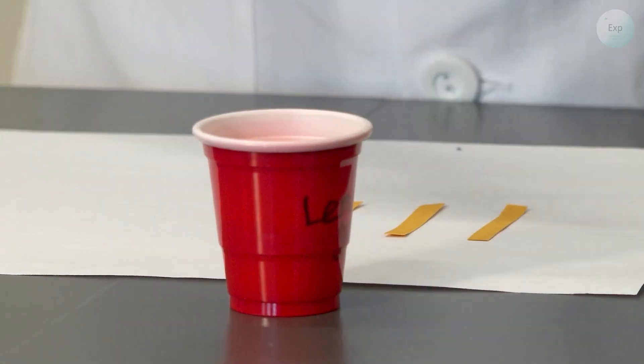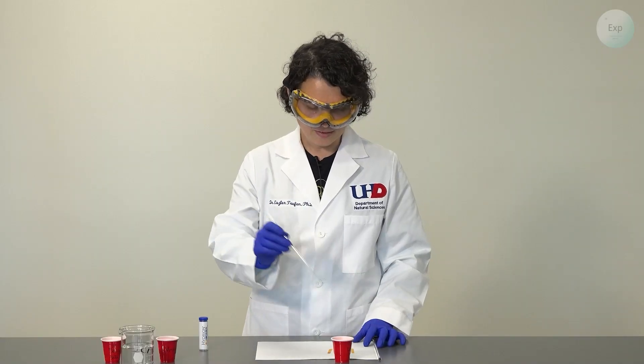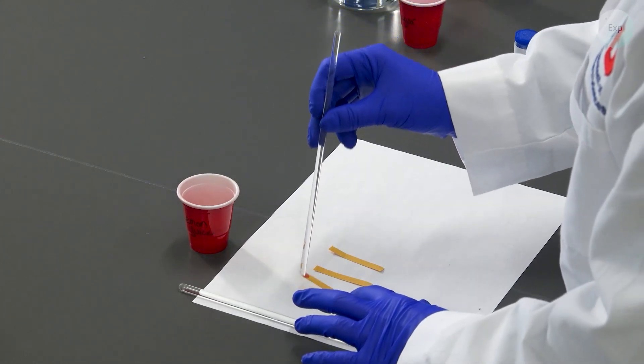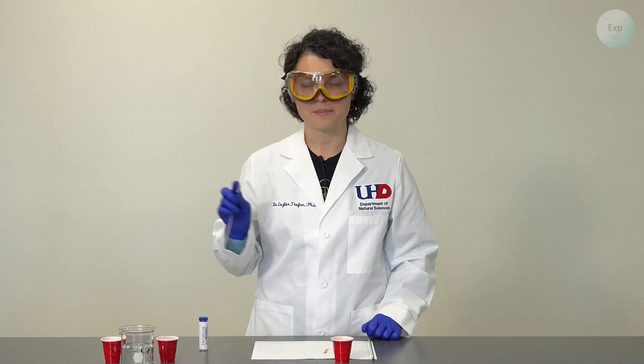For the first measurement I'm going to take my glass stirring rod, dip it in the lemon juice, extract it, and then place one dot on the pH paper.